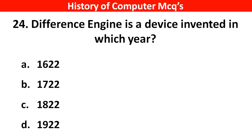Next question. Difference Engine was invented in which year? Options A: 1622, B: 1722, C: 1822, D: 1922. Right answer is option C, 1822.